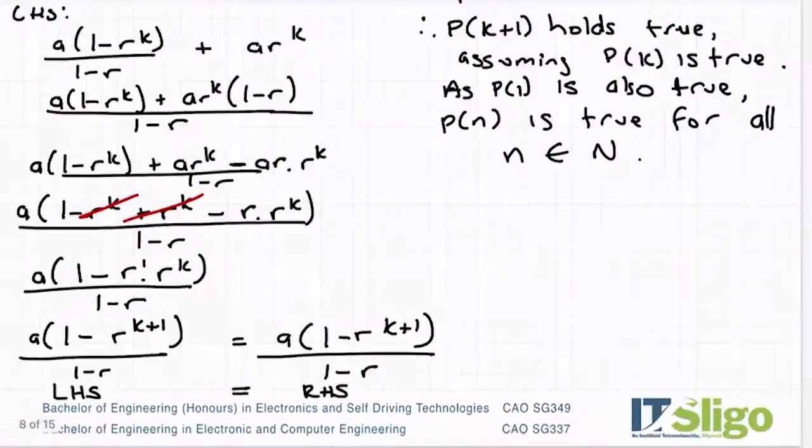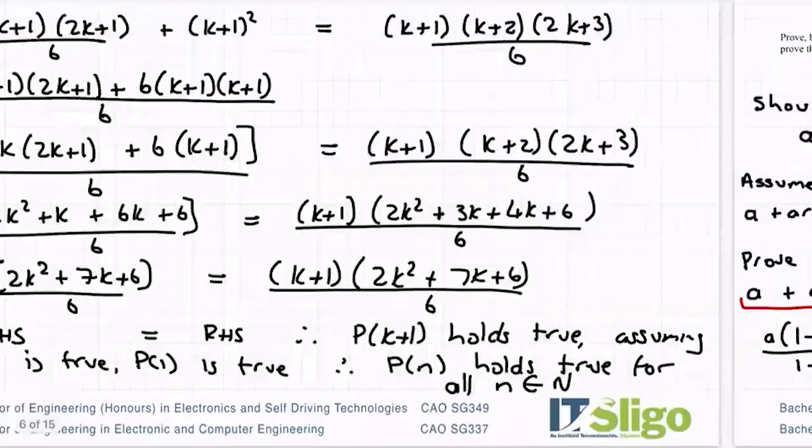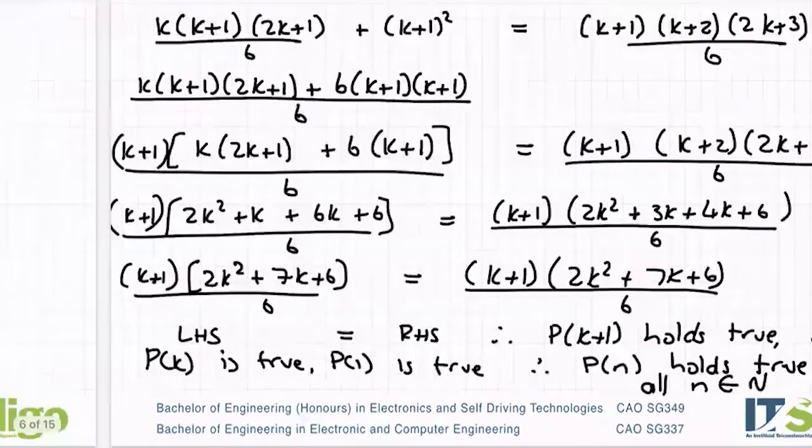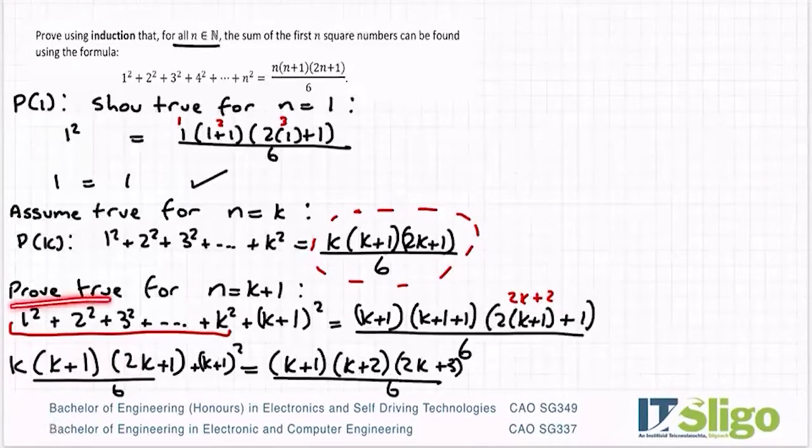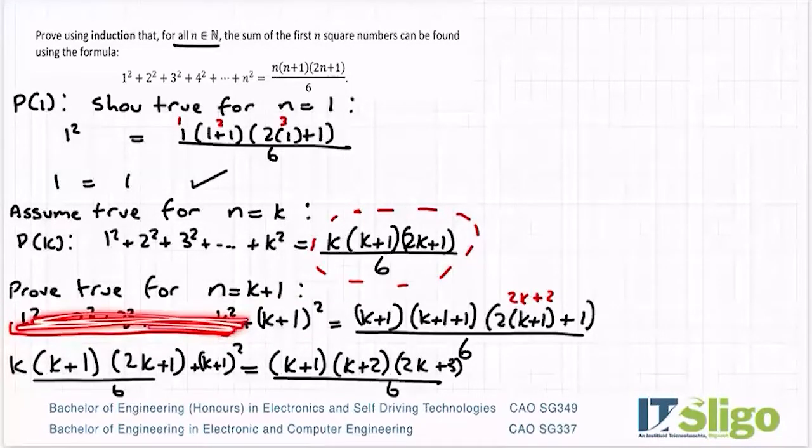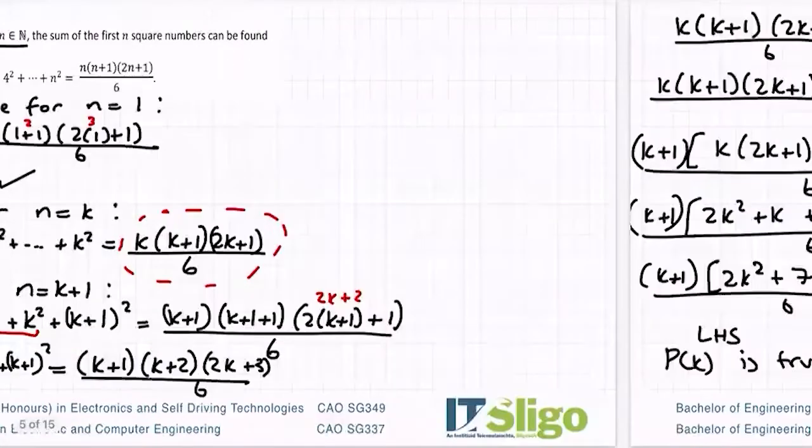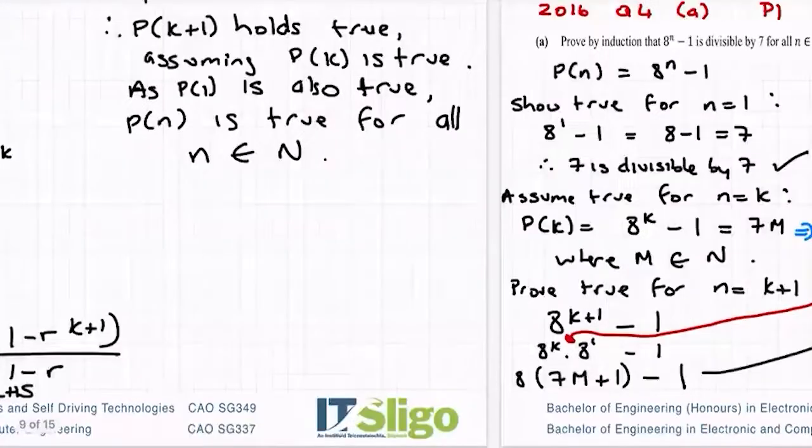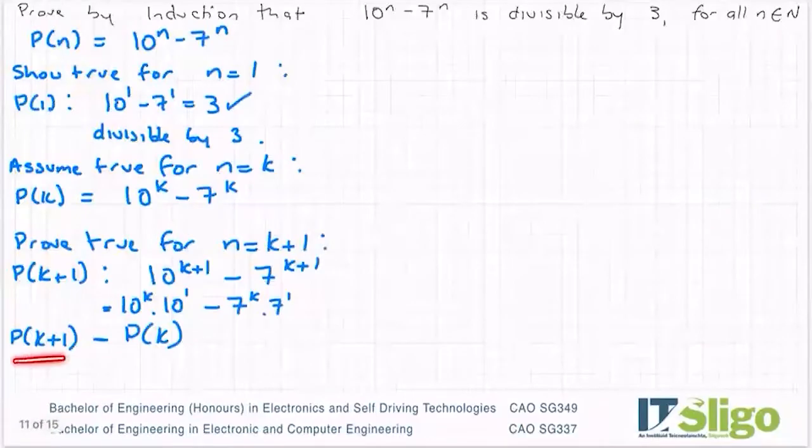Just to explain that I'm going to go back to one of our sequence and series ones. So that would be my expression for p of k, for example, and there's my p of k plus 1. If I subtract my p of k from p of k plus 1, can you see that I'm just left with p of k plus 1? So if I subtract these two expressions from each other, I'm going to be left with just the term that's at p of k plus 1 and I wonder is that divisible by 3?